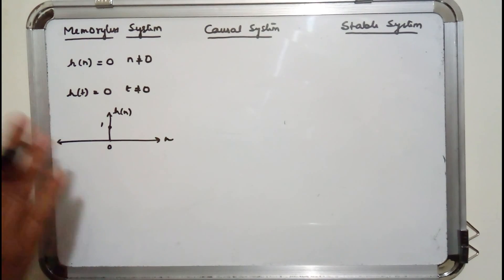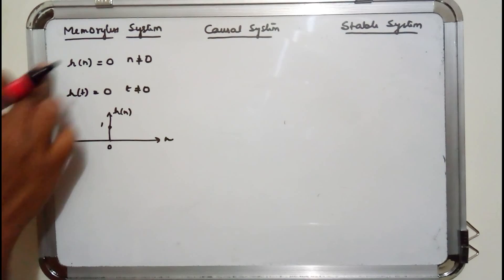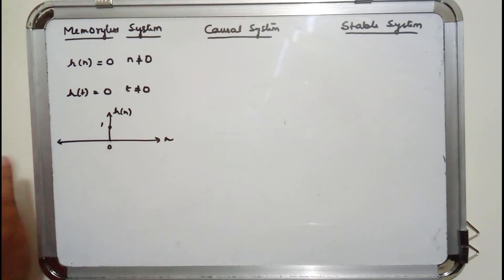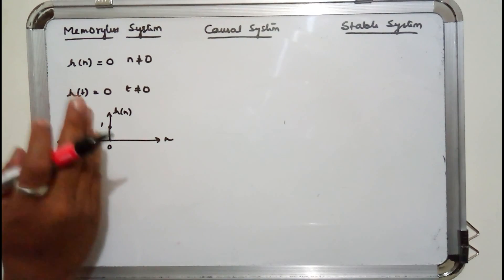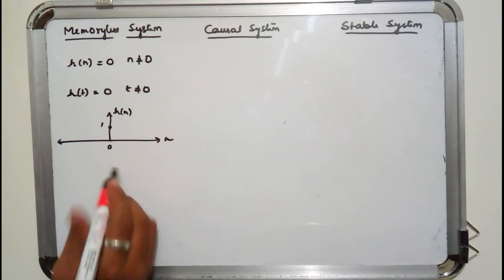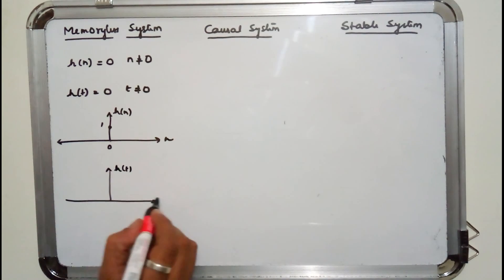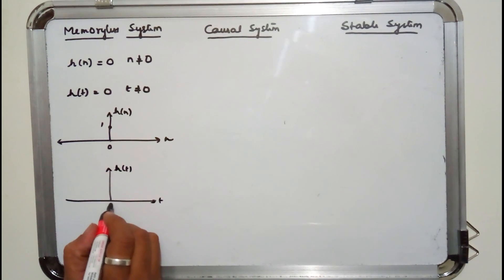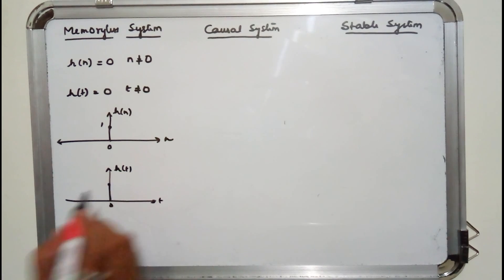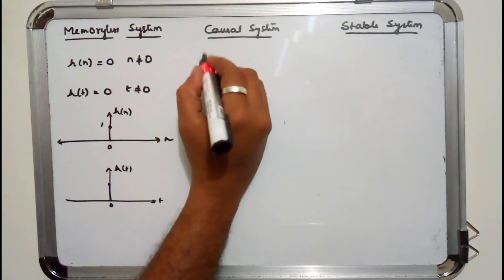The topic we are discussing is categorization depending upon the impulse response. If h[n] has its value only at n=0, or if h(t) has its value only at t=0, then the system is said to be memoryless.